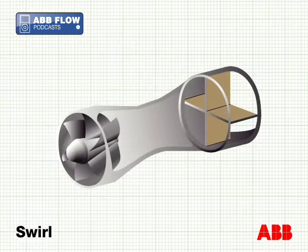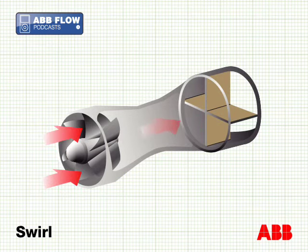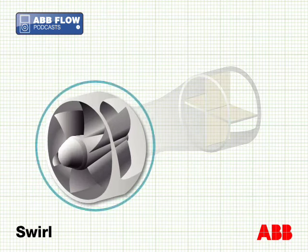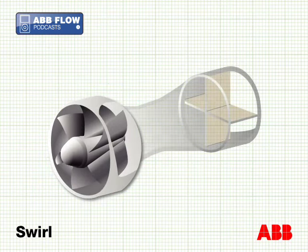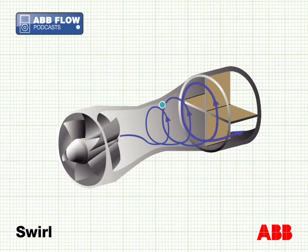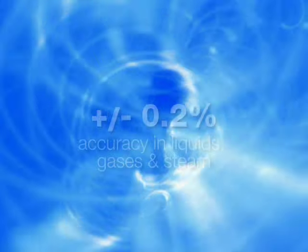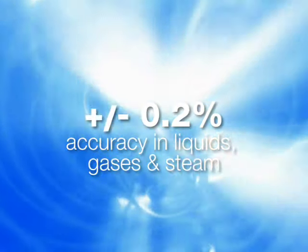The ABB swirl flow meter is based on the pressure variations which occur when a flow is interrupted by an obstruction, similar to the vortex principle. Here the flow passes through fixed spiral vanes. These cause a spiral flow pattern which rotates down the pipe. The frequency of the fluid's rotation is dependent on the flow rate. A sensor detects the speed of rotation and transmits the signal to the electronics. These instruments are also widely used in harsh process and environmental conditions.